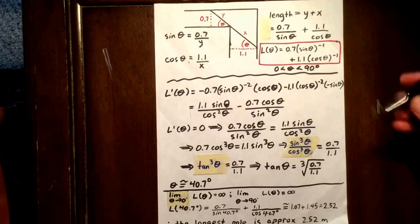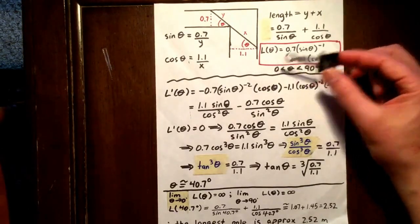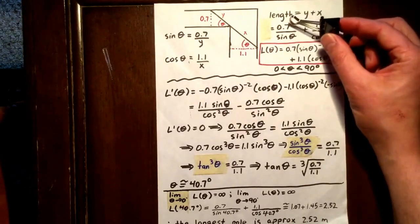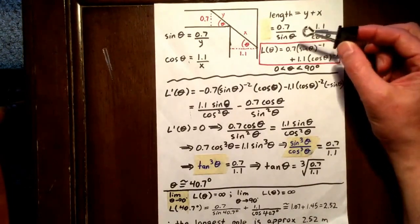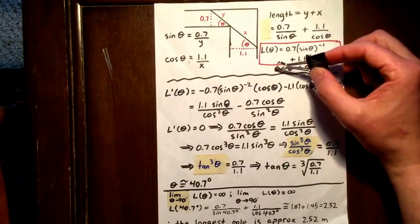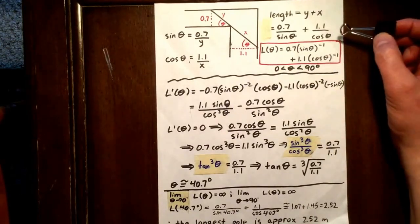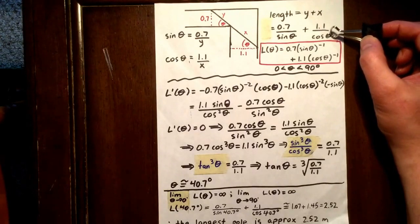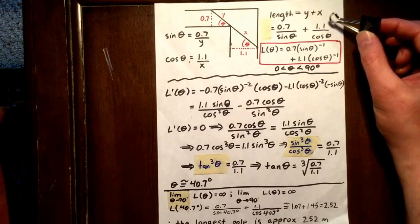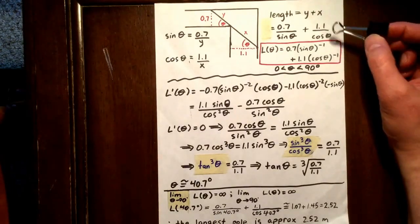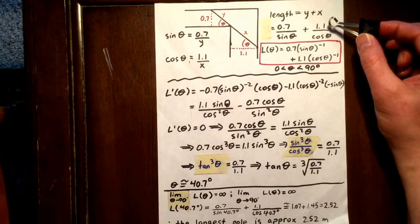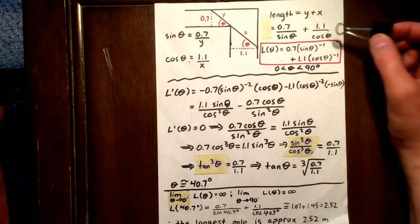So we realize we can't actually sub in a 0, because sine of 0 would be 0, and 0.7 over 0 would be undefined. But we can take the limit as theta approaches 0. Similarly, we can't actually plug in a theta value of 90, because that would make cos theta 0. 1.1 over 0 would be undefined. But we can determine the limit as theta approaches 90.